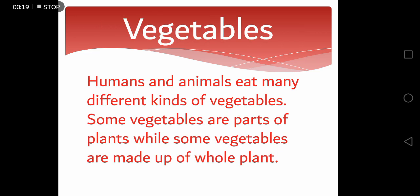Humans and animals eat many different kinds of vegetables. We eat some vegetables raw while others taste better when they are cooked. Some vegetables are parts of plants while some vegetables are made up of the whole plant.